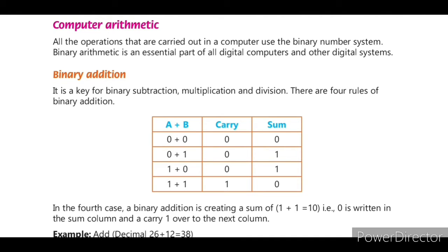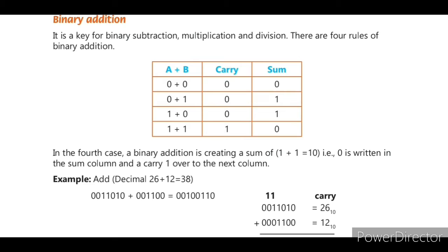Let's look at the tabular column with columns A, B, Carry, and Sum. We add two binary numbers — only 0s and 1s. The four possible combinations are: 0+0, 0+1, 1+0, and 1+1.